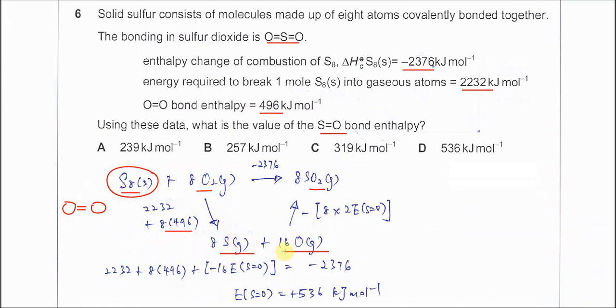The gaseous atoms then combine to form SO2. Because bond formation is exothermic, you have to put a negative sign here. SO2 has two S=O double bonds, so it's two times the bond energy of S=O, and it forms eight molecules, so you need to multiply by eight.